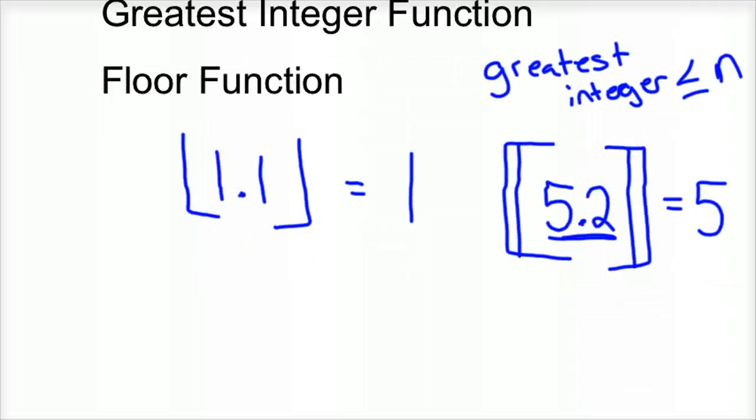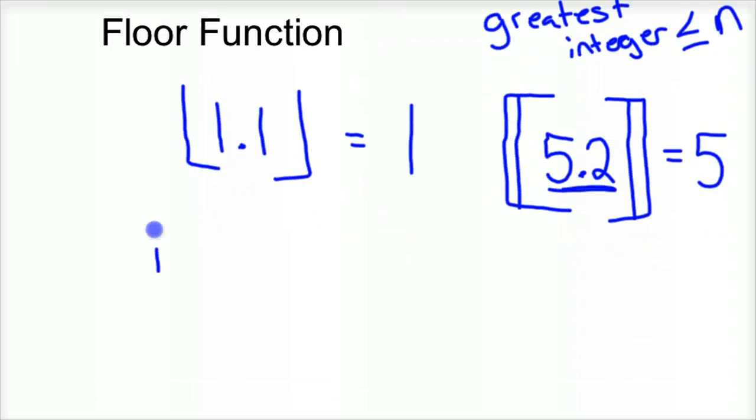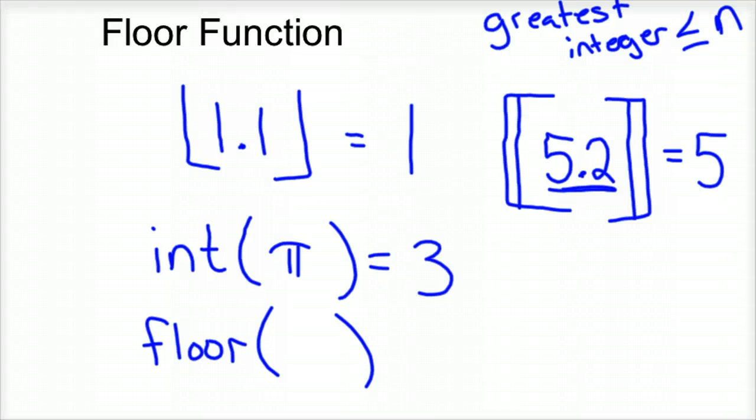So what about pi? And the third way it's done is int or floor, like this. So let's say we did the floor function for pi. The floor function for pi, 3.14, well, the greatest integer less than or equal to that would be 3.